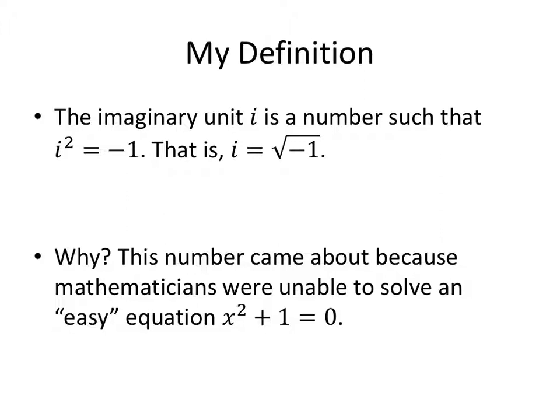So first, I call this my definition because I didn't lead up into fancy stuff beforehand. The imaginary unit i is a number such that i squared equals negative 1. And if I take the square root of both sides, that tells me that i is equal to the square root of negative 1.